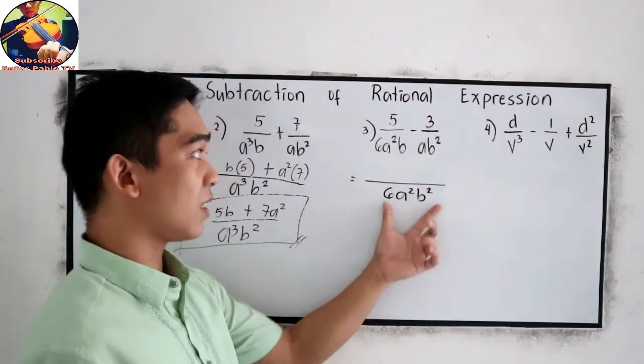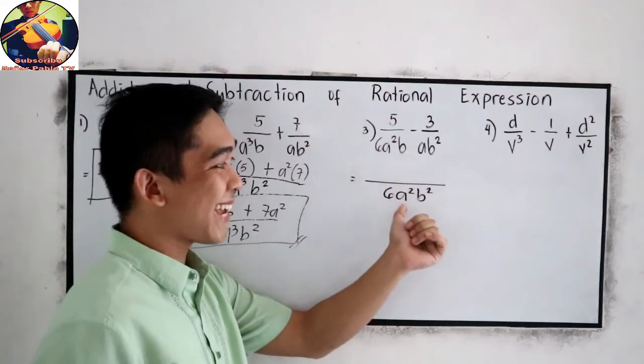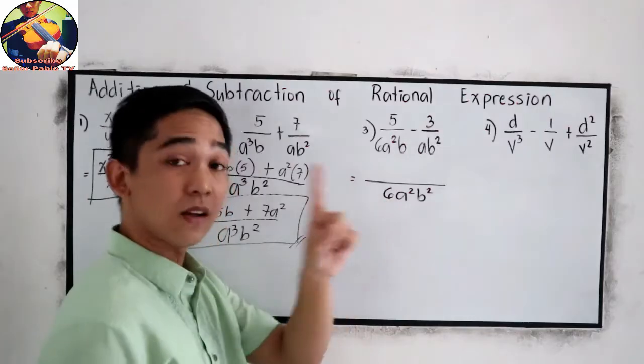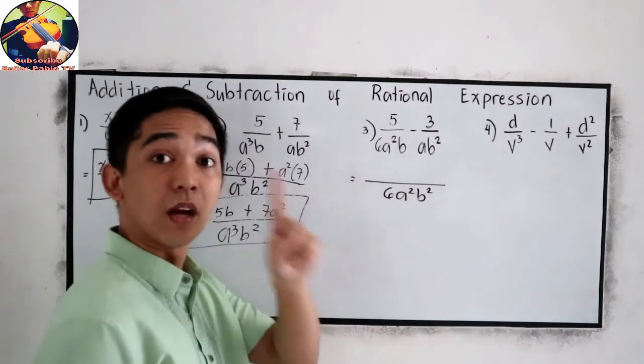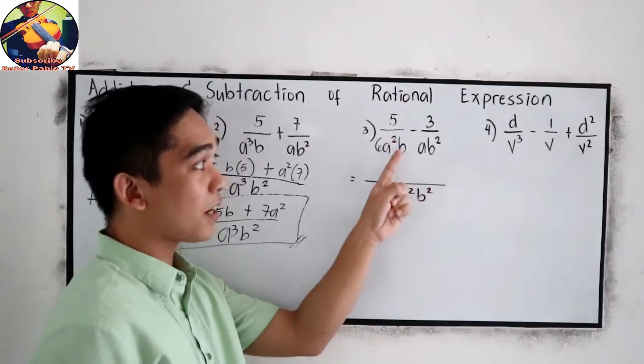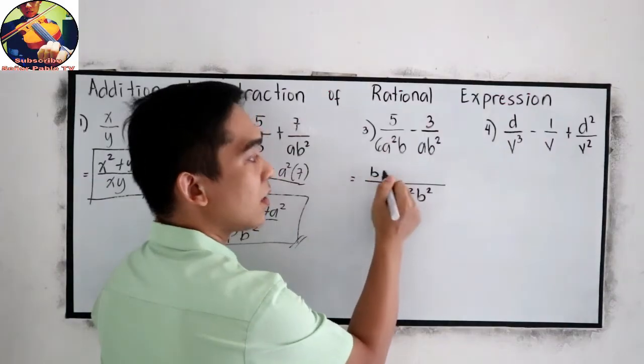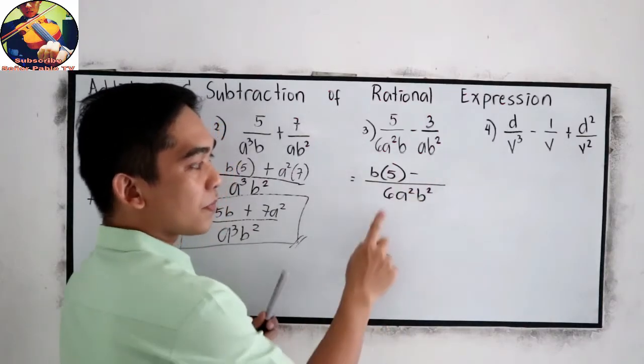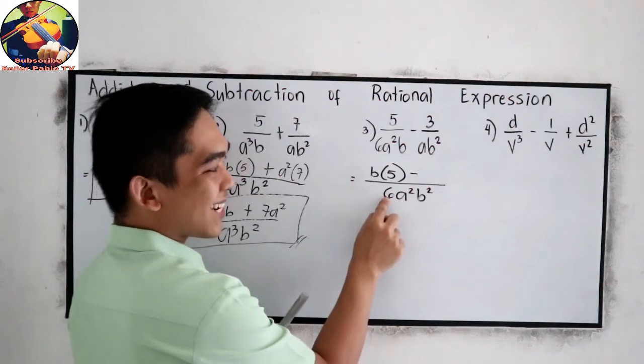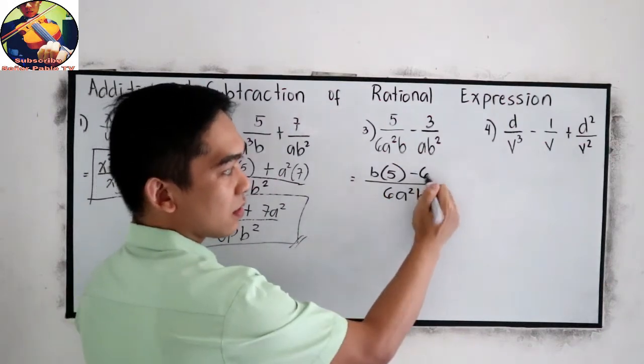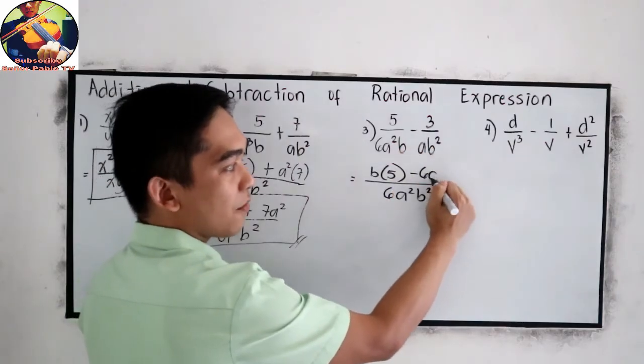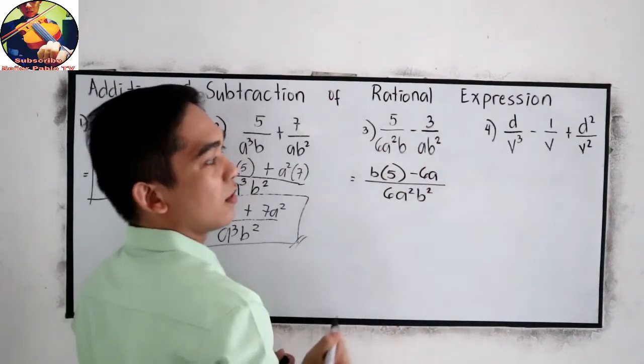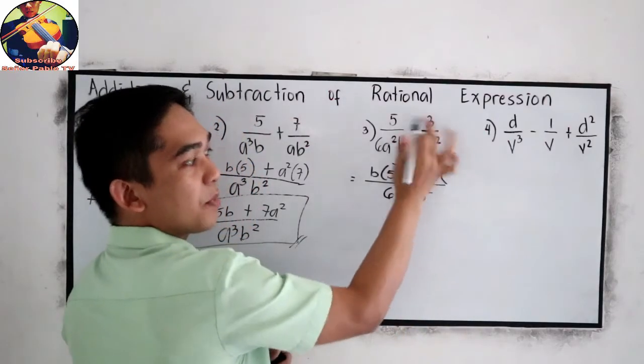Now, divide our LCD to the denominator of each term. 6a squared b squared divided by 6a squared b. So, 6 divided by 6, that is 1. a squared divided by a squared, that is 1. Now, b squared divided by b, so we have b. And we're going to multiply that to our numerator, which is 5. Minus, in this case, 6 divided by 1, so we have 6. And for a, a squared divided by a, so we have a. And for b, b squared divided by b squared, that is 1. Times our numerator, 3.